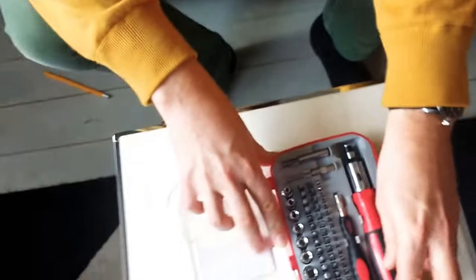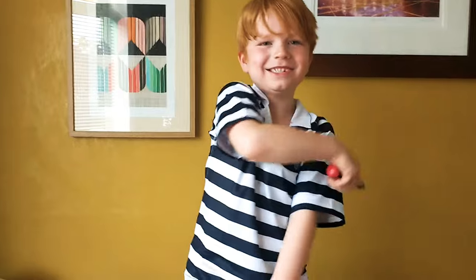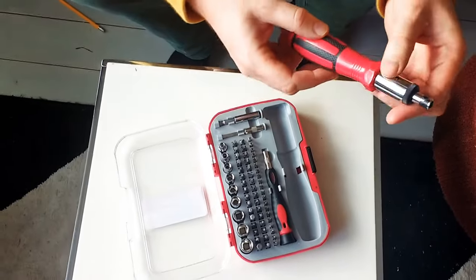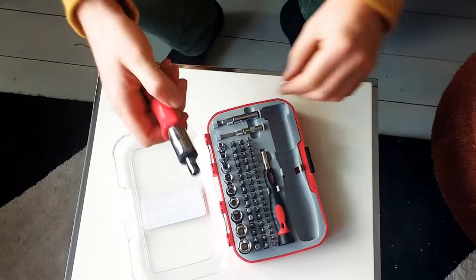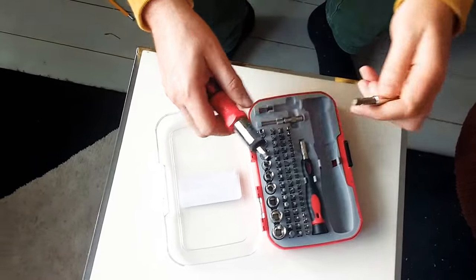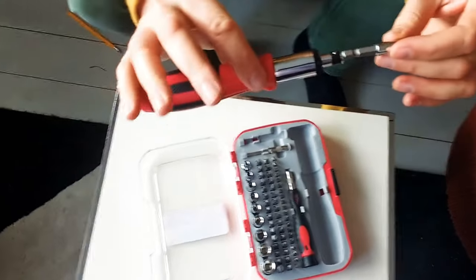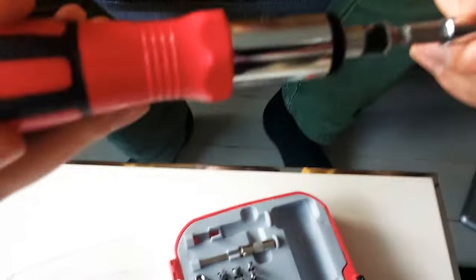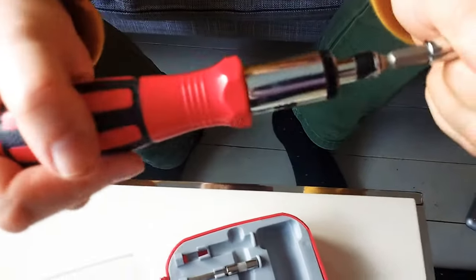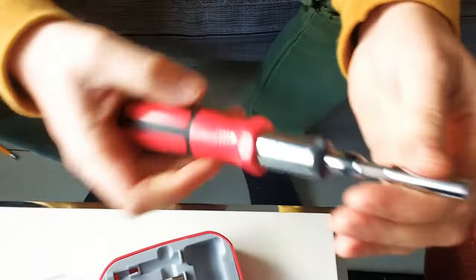What I've got is we'll start off with a ratchet screwdriver. Let's have a look at the bits you get with it. This bit is in there. So you need to snap it in so that it's nice and hard.